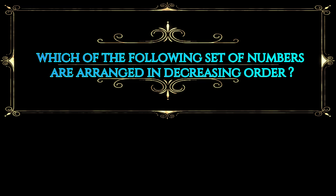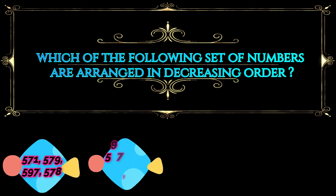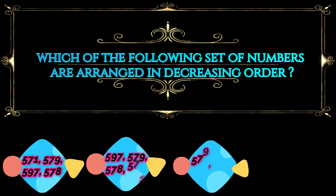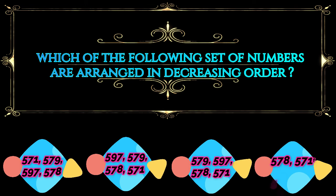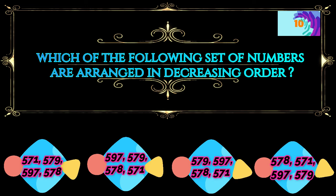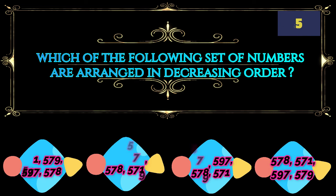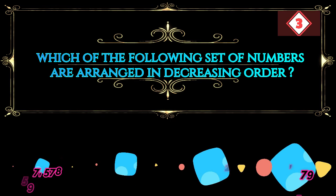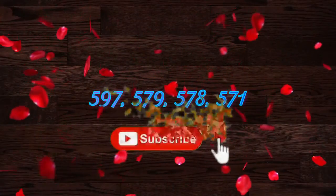Next question: Which of the following set of numbers are arranged in decreasing order? These are your options. Your time starts now. Your answer is option B.